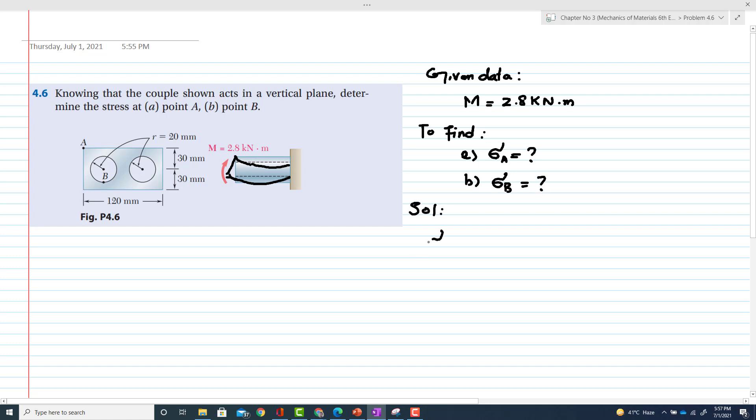As we know, stress at any point can be found by using formula: σ = -My/I, where M is the moment, Y is distance from neutral axis to the point where we want to find the stress, and I is the moment of inertia.